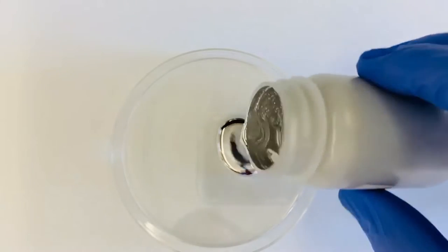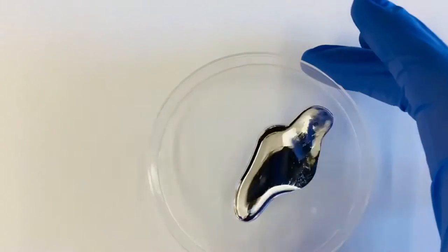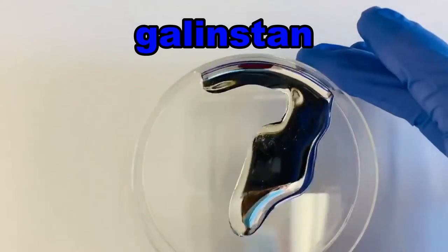This material looks a lot like mercury, doesn't it? Well, it's not mercury. It's actually a metal alloy called gallinstan.